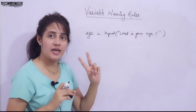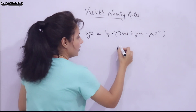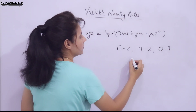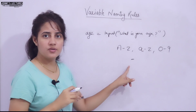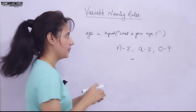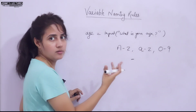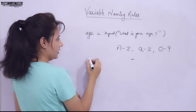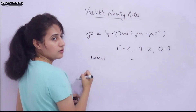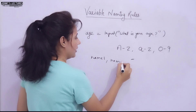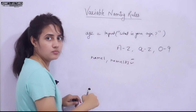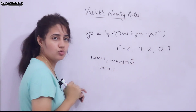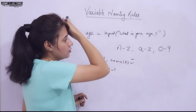A variable name can have only alphanumeric characters — capital A to Z, small a to z, digits 0 to 9, and underscore. For example, 'age' is fine using letters. 'name1', 'name123', and 'name_1' are all fine because underscore is also allowed.